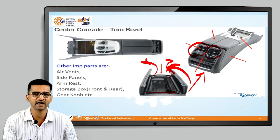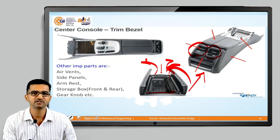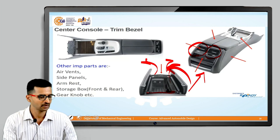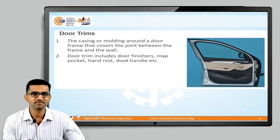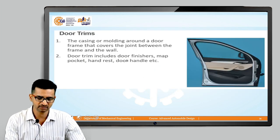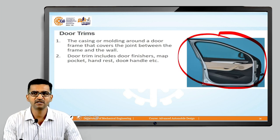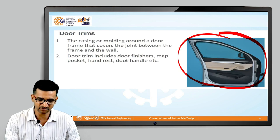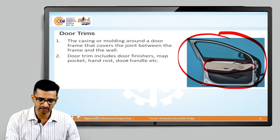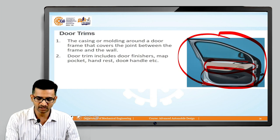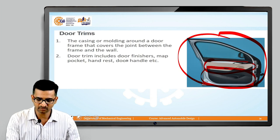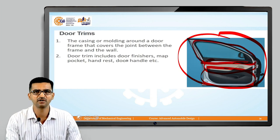In automatic transmission cars the central console can also hold the gear knob, and higher-level cars have gear knobs that allow ratio changes in automatic transmission. The next part is door trim — this is an interior photograph of a typical door. The door trim is the interior portion of the door, including plastic parts, rubber beading, and a speaker.